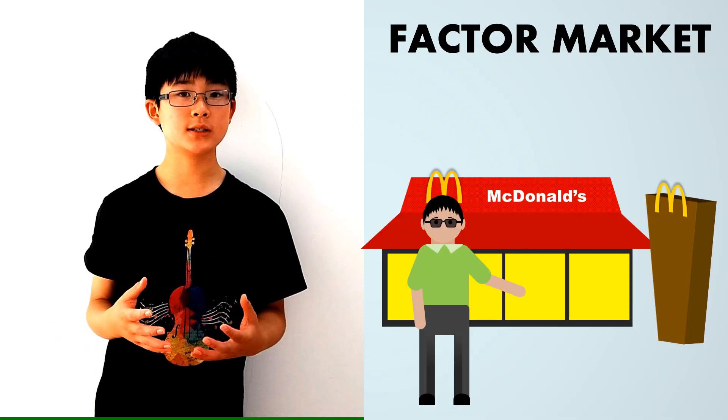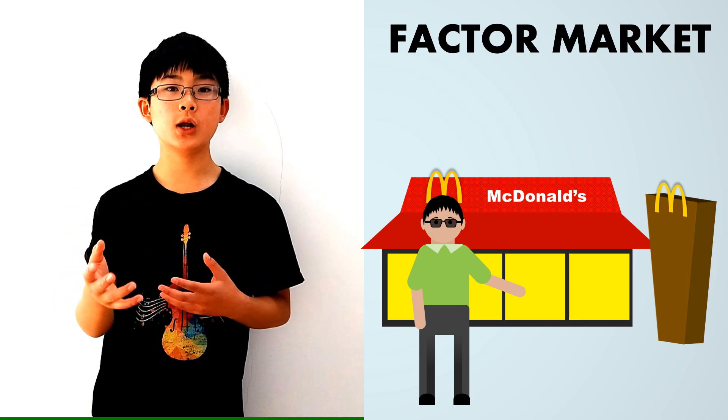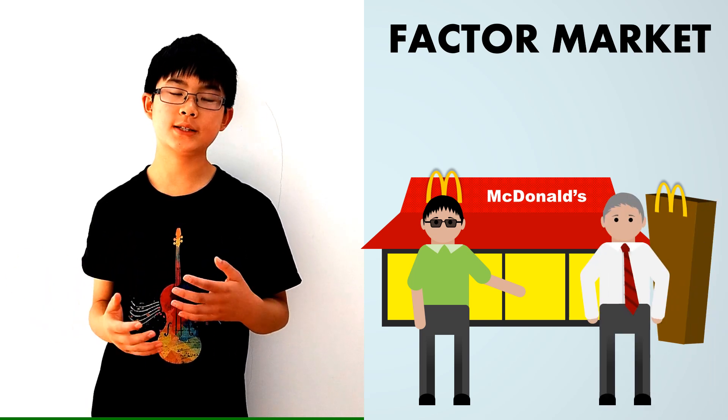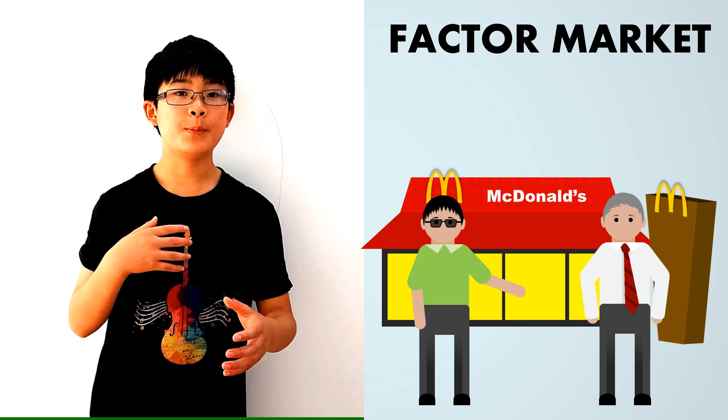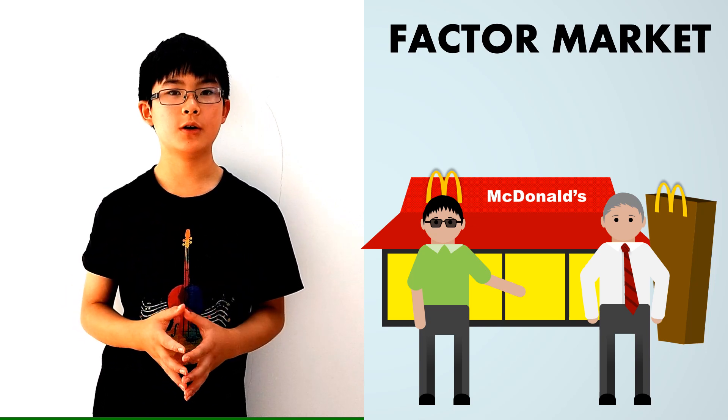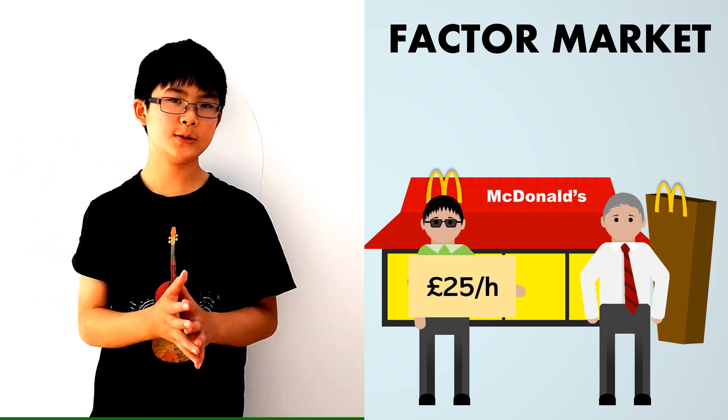Now, the factor market is similar to the product market in the way that it works. It's voluntary exchange all over again. So, when I go and see the owner to become, let's say, a waiter in McDonald's, I will be bargaining, we will be bargaining for how much he's going to be paying me per hour. I could insist on a wage of £25 an hour.